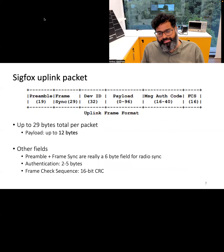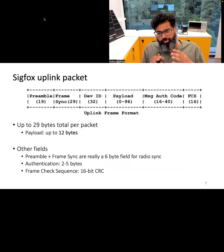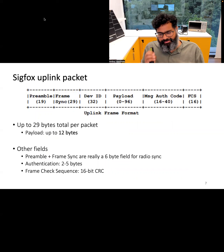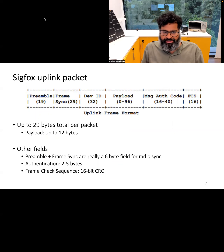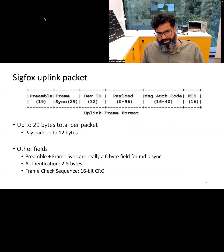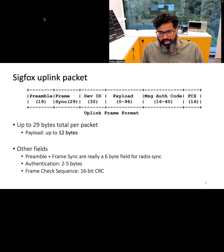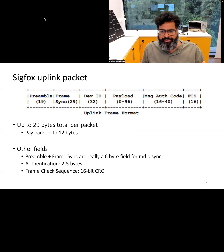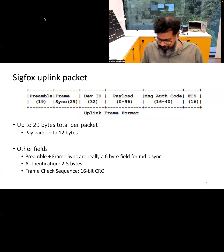The uplink packet is typically about 29 bytes with about 12 bytes allocated for the payload, so we are looking at sending very small amounts of information. This is also because the data rate supported is just a few hundred bits per second. The packet also contains the usual fields such as preamble, CRC, and authentication.